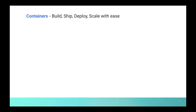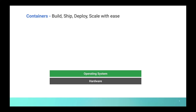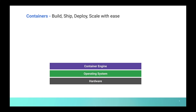Containers help solve this problem. Containers help build, ship, deploy, and scale applications with ease and independently. Looking at the architecture: similar to before, you have hardware and an operating system. On top of that, you have a container engine like Docker — we will learn more about Docker in our next video. The container engine software helps create containers that package libraries and dependencies along with the application.